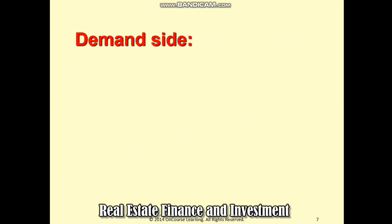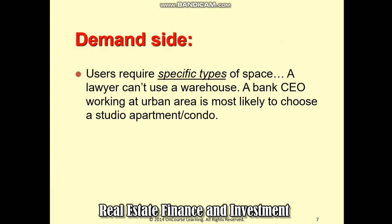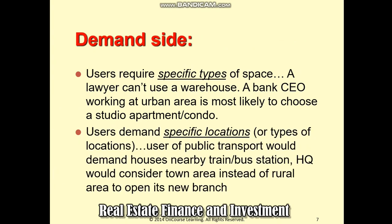From the demand side, space market is segmented into two segments: types of space or property, and location of property. For example, in terms of types of property, a lawyer would demand to rent an office for his firm rather than a warehouse. A bank CEO working in an urban area is most likely to choose a studio apartment or condo to stay. In terms of location, a user of public transport would demand houses nearby train or bus stations to ease their travelling.